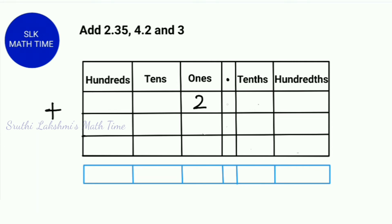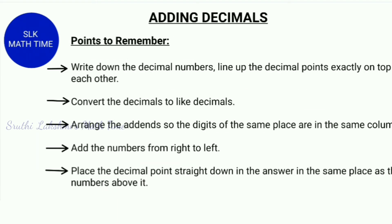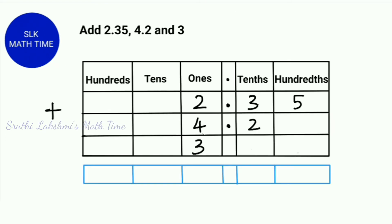Now, for 4.2. Since 3 is a whole number, we write it in the ones place. As you see, we have to convert the decimals to like decimals. To convert the decimals to like decimals, we add zeros.